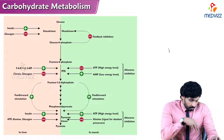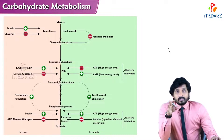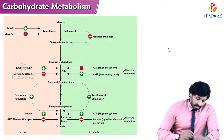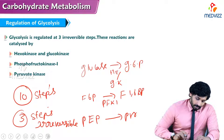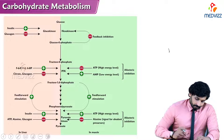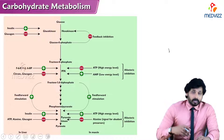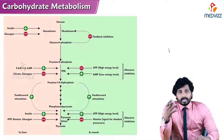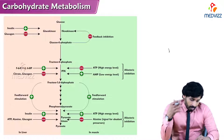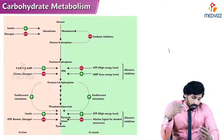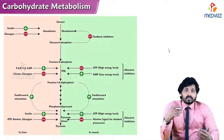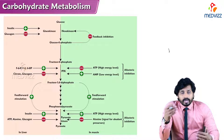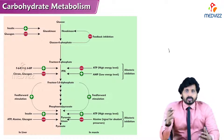In this diagrammatic representation you can see the sequential conversion of glucose to pyruvate, along with the activators and inhibitors of glycolysis. Different colors are used — green indicates substances promoting glycolysis, and red indicates substances inhibiting glycolysis.